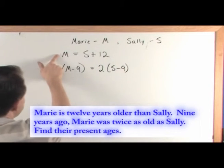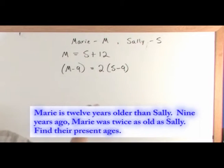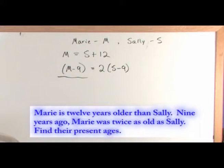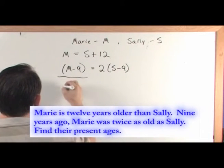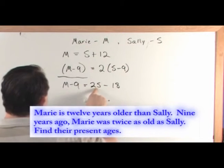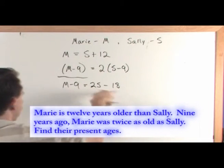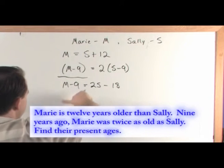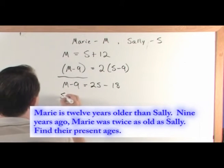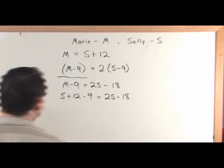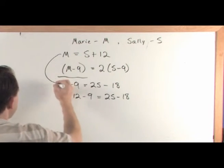Now we have two equations, two unknowns — we have enough information to solve this problem. Since the first equation is already solved for M, we're just going to plug it in. First, distribute the 2: 2(S - 9) becomes 2S - 18. Then take M = S + 12 and substitute it in for M, giving us (S + 12) - 9 = 2S - 18. All we've done is plug S + 12 in place of M.